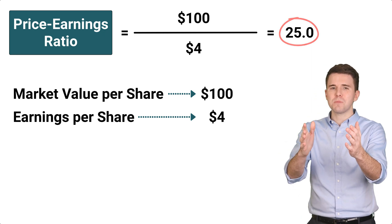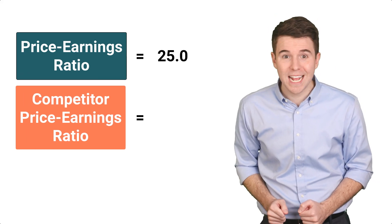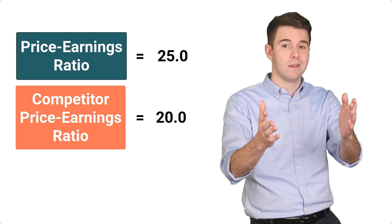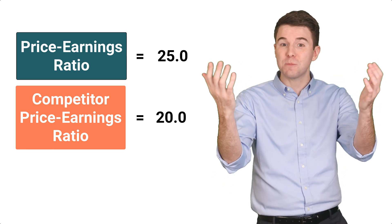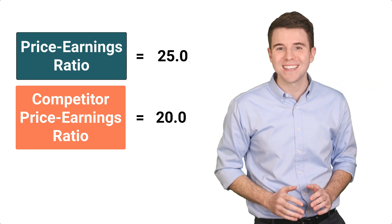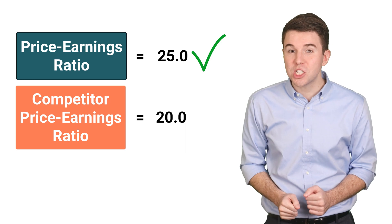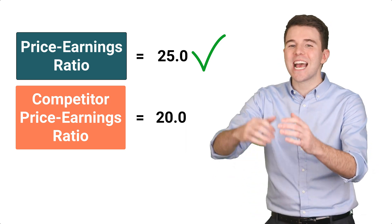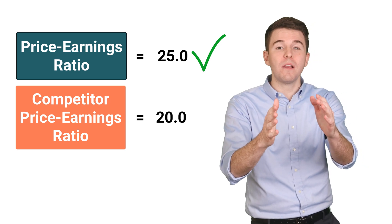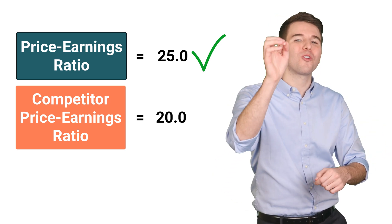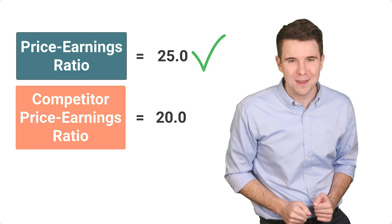Now to put this in perspective, let's compare this with a competitor that has a PE Ratio of 20. Which company has higher market expectations? Well, the company with a PE Ratio of 25 has higher market expectations, because the market is willing to pay more for each dollar of its current earnings stream.